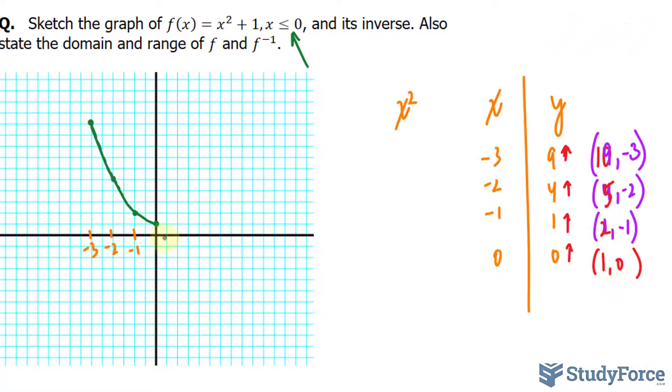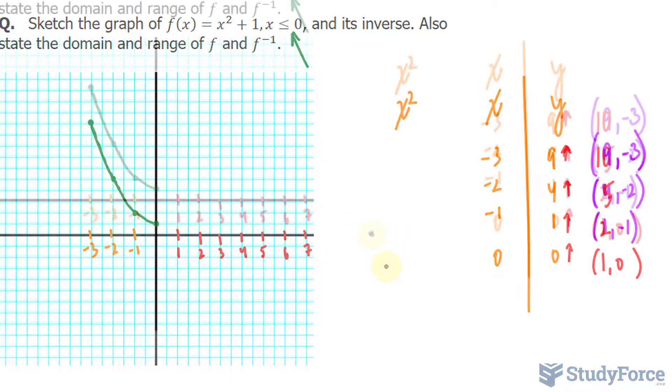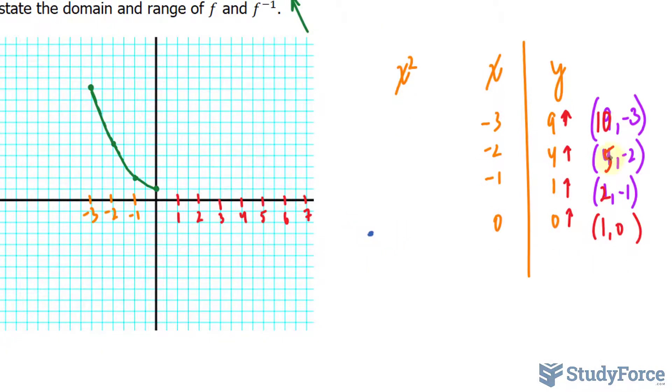That being said, our first point would be (10, -3). I think that's going to go beyond what we have here, so 1, 2, 3, 4, 5, 6, 7. It would be somewhere, of course, over here. The next point, (5, -2) would be, 5 and -2 is right here. And then we have (2, -1) and (1, 0).